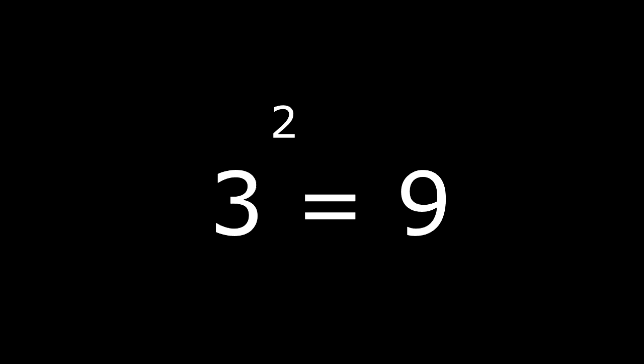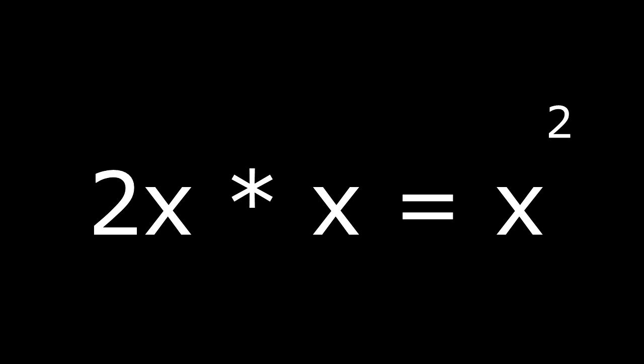9, if you know your pre-algebra, is 3 squared. That means that X times X is actually X squared. And multiply that by 2, and you get your answer. 2X squared.